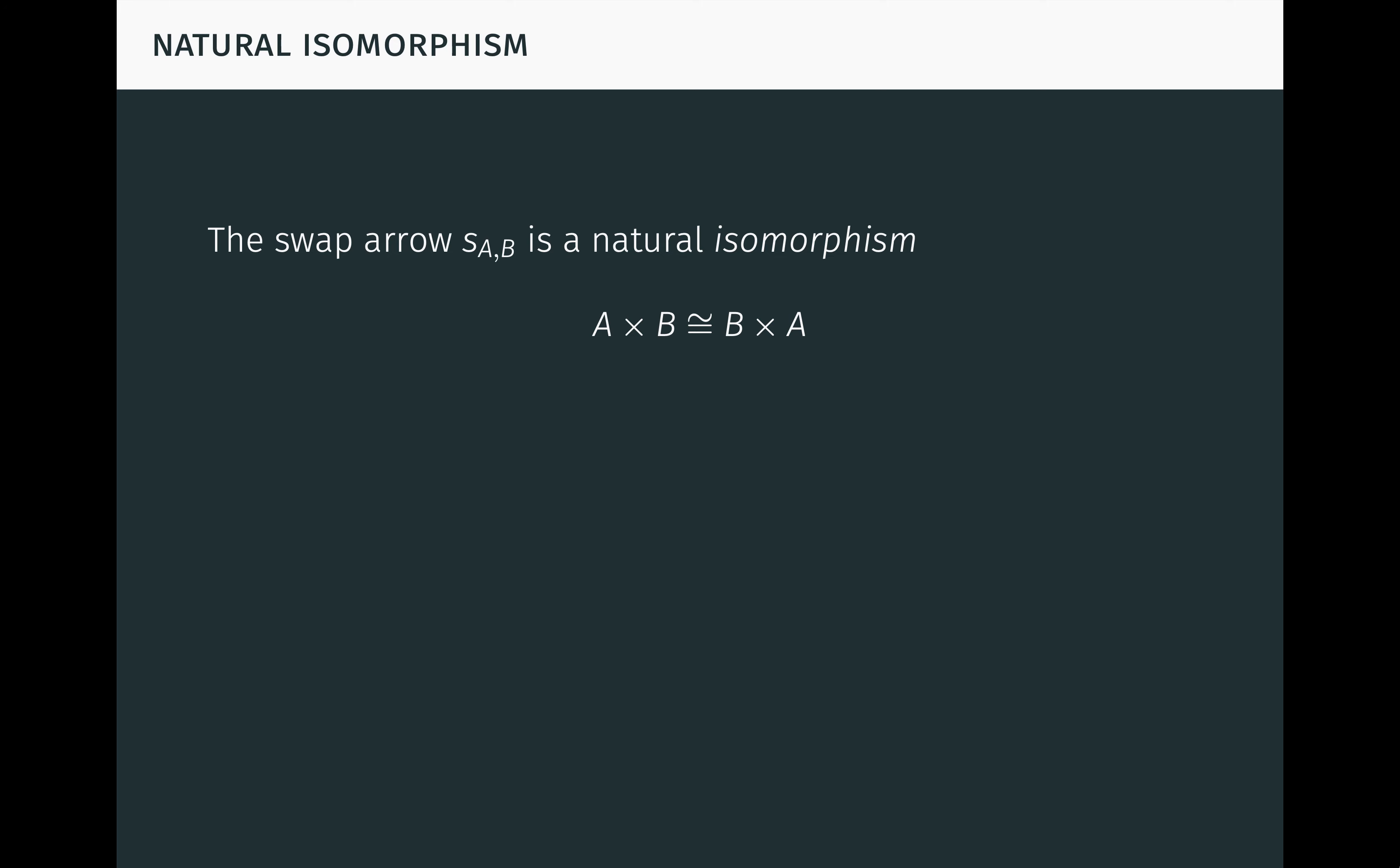We've already seen that swapping of products is a natural transformation, but since swapping is invertible, it's actually a natural isomorphism. This shows that the product operation is commutative up to isomorphism, a fact that has nothing to do with individual objects and everything to do with the product operation itself.